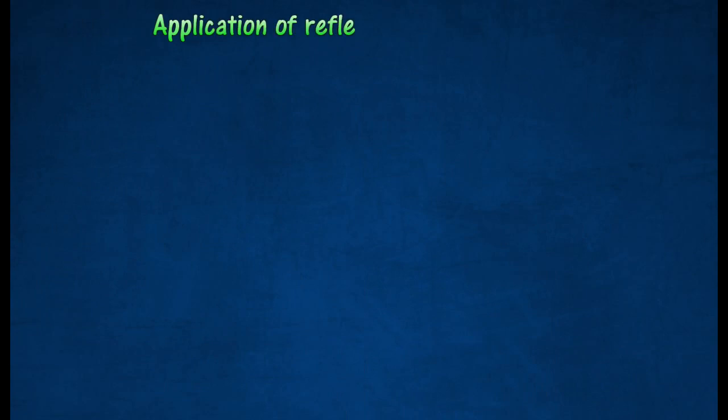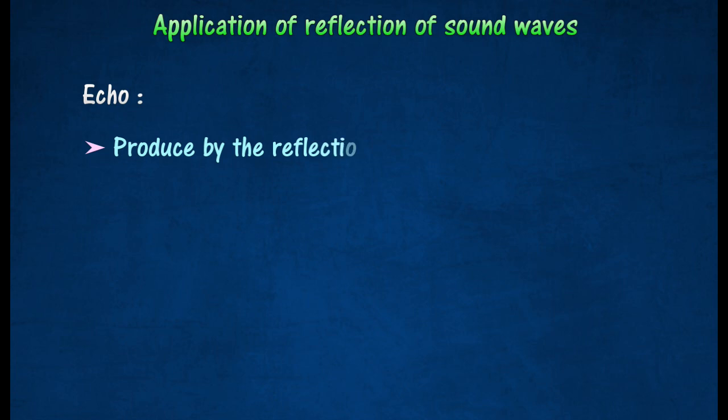Application of reflection of sound waves: Echo is produced by the reflection of sound waves on the hard reflecting surfaced. Echo can be used to measure the speed of sound in air.